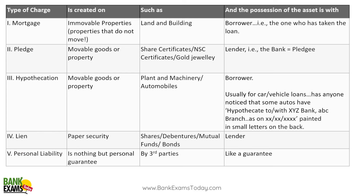Now look at this table — it is very important to remember. A majority of questions from this topic can be answered if you remember it. The table covers mortgage, pledge, hypothecation, lien, and personal liability. A mortgage — a good example is a home loan. In a home loan, the borrower retains possession of the house. It is created on immovable properties. So a home loan is a mortgage.